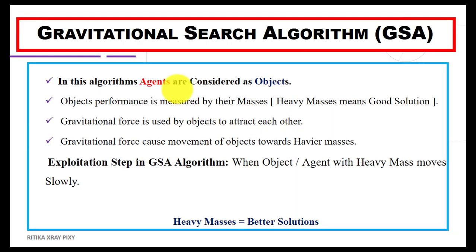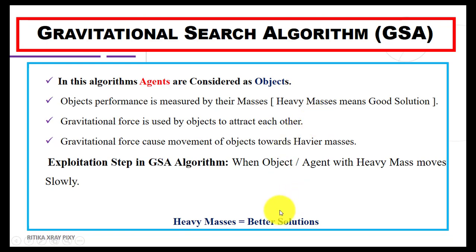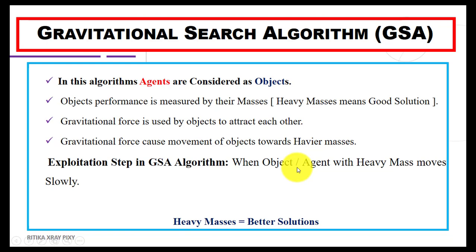As in space there is no gravity, human bodies float. On Earth, gravity gives weight to physical bodies. In this algorithm, agents are considered as objects, and object performance is measured by their masses. A heavy mass means a good solution — it is the better one. Objects can attract each other with the help of gravitational force.